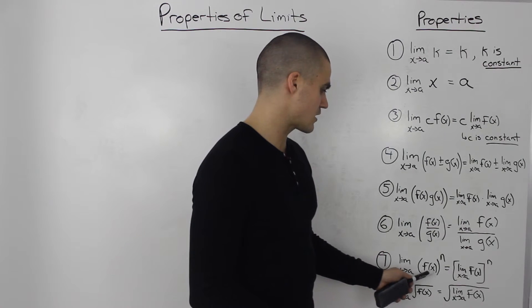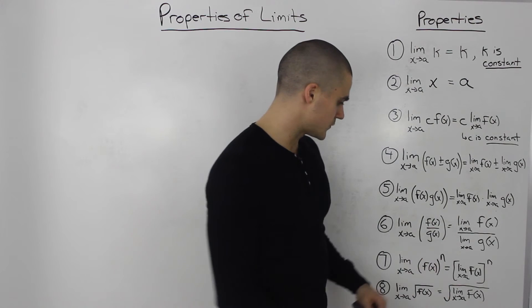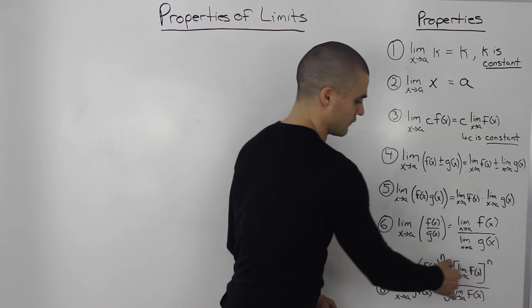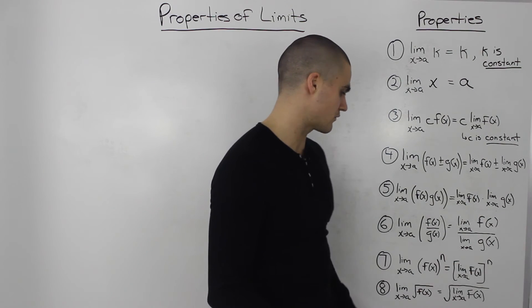The limit as x approaches a of f of x to the power of n. You would just take the limit of the function separately and then whatever your result is take it to the power of n.